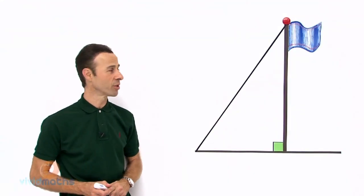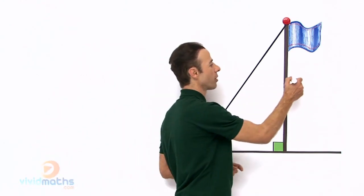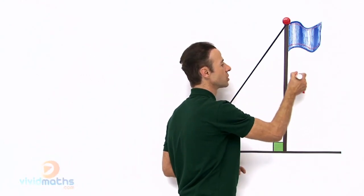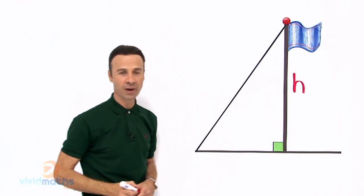First things first, let us start to label the diagram. I am going to call the height here H for the height of the flag pole.